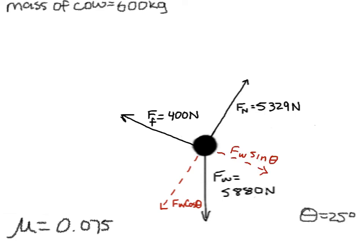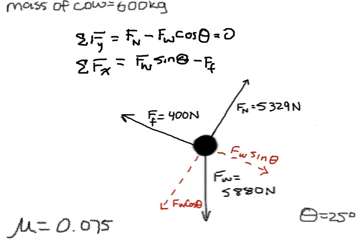We also have an x component of the force of weight, Fw sine theta acting opposite of friction. To sum it all up, we have a net force of zero in the y direction, and in the x direction we have Fw sine theta minus frictional force. Plug that in, and you get 2,045 newtons.